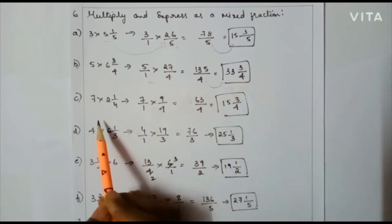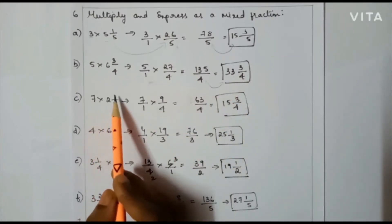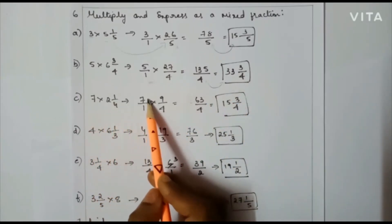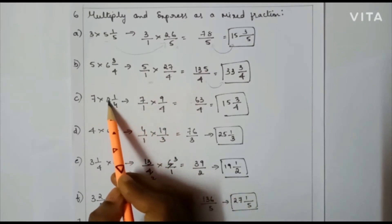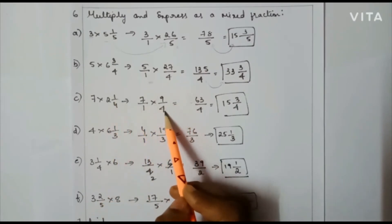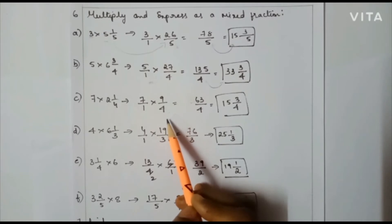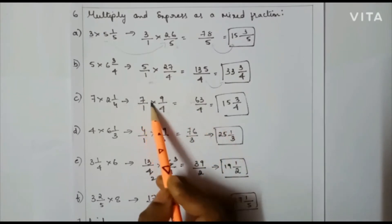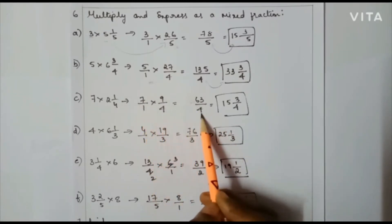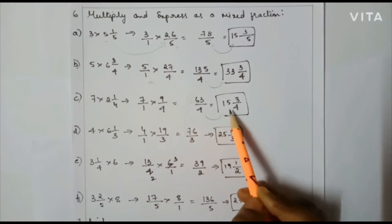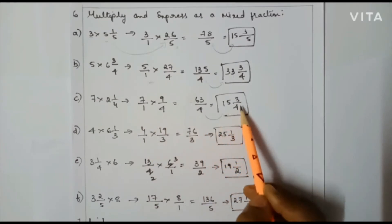Next one: 7 × 2(1/4). That is 7/1 × (4×2=8, plus 1 = 9)/4, so 9/4. I check whether I can cancel — I can't cancel. So 7 × 9 = 63, and 1 × 4 = 4. Converting to a mixed fraction gives 15 and 3/4.